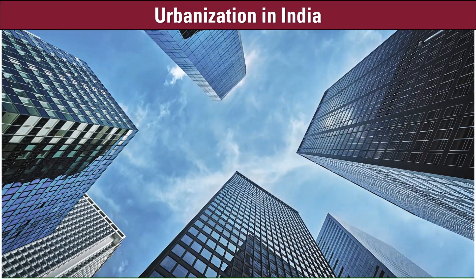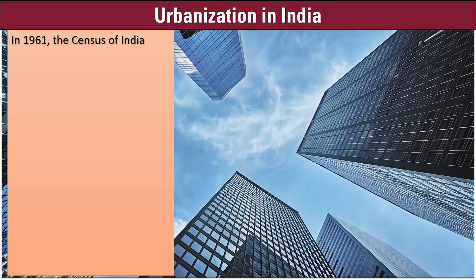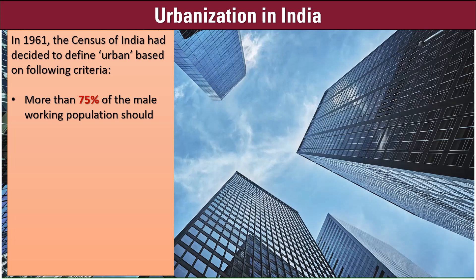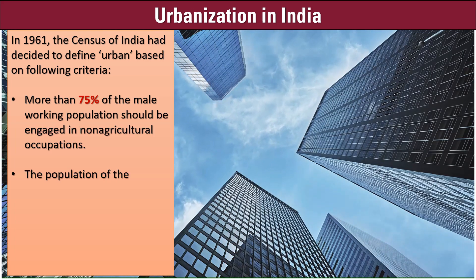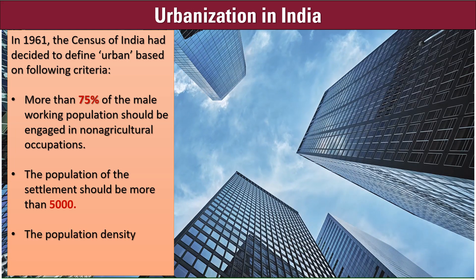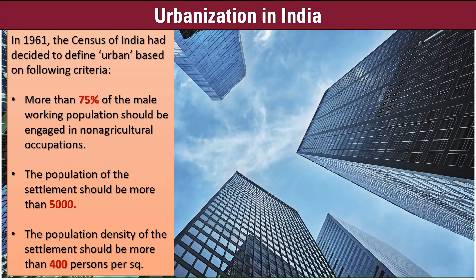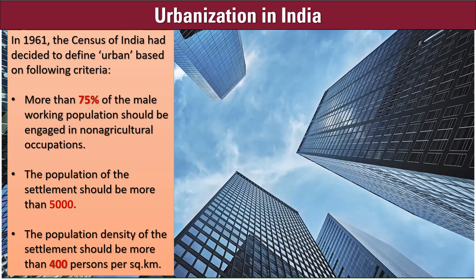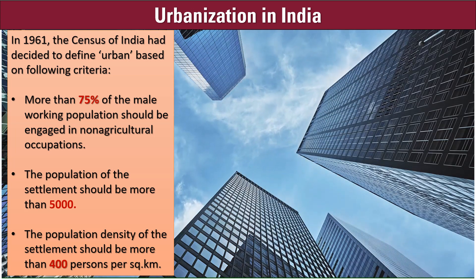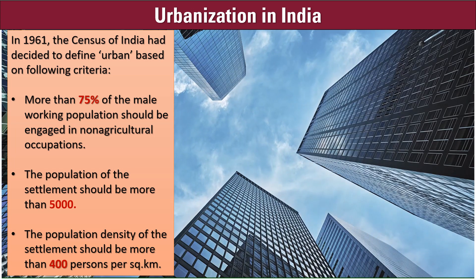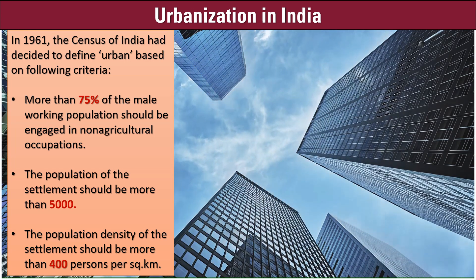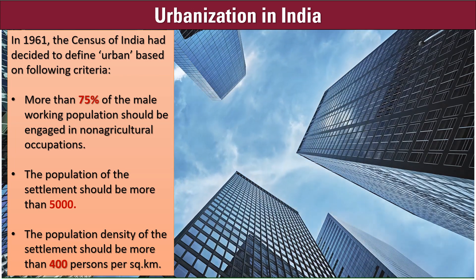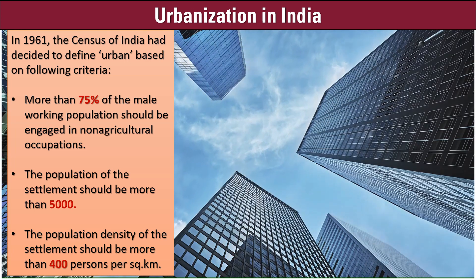Let's understand the criteria for urban areas. In 1961, the Census of India decided to define urban based on the following criteria: more than 75% of the male working population should be engaged in non-agricultural occupations; the population of the settlement should be more than 5,000; and the population density of the settlement should be more than 400 persons per square kilometer.